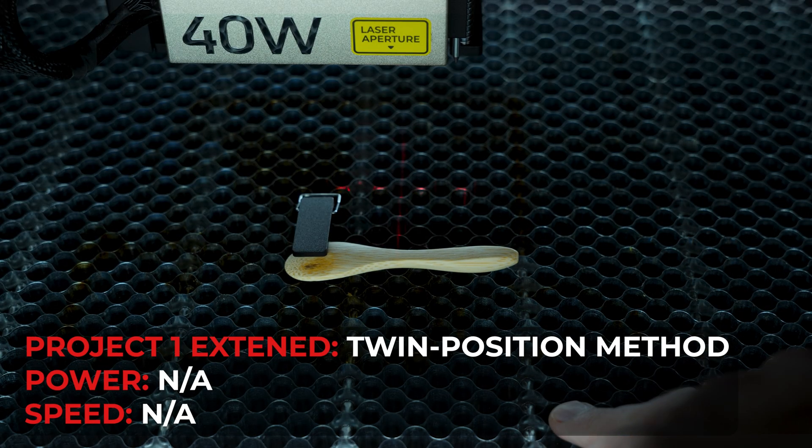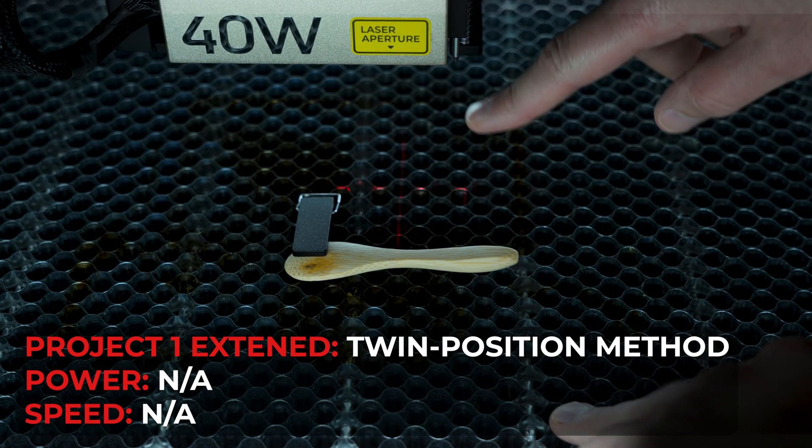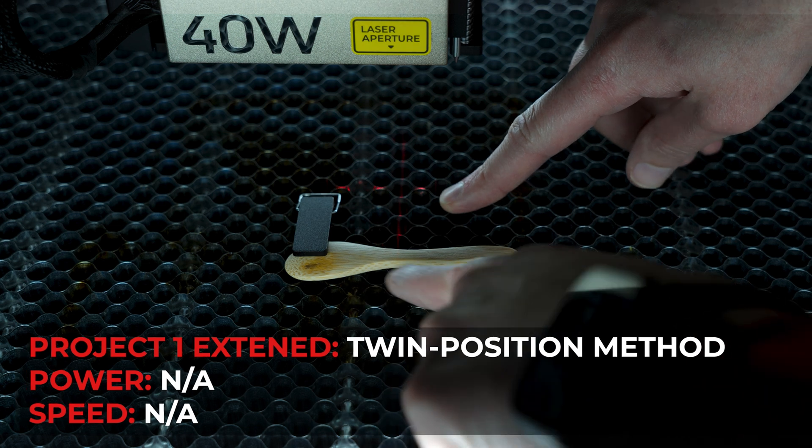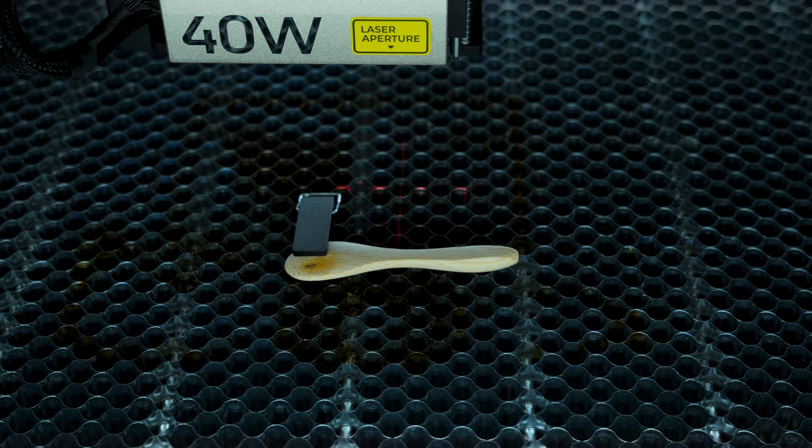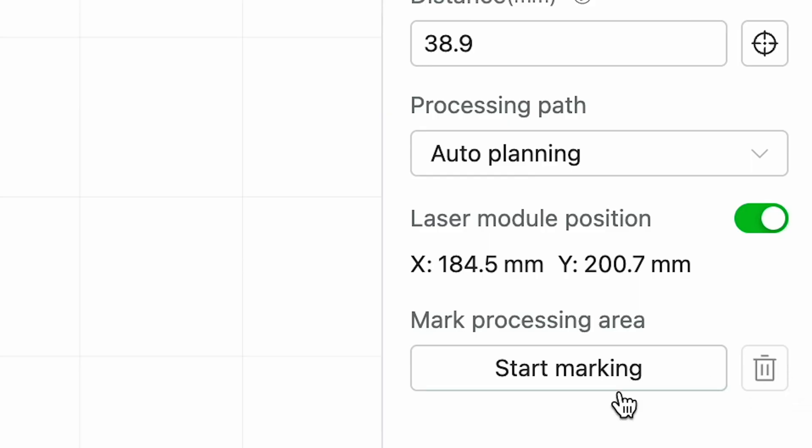Now I am going to show you how to use the twin positioning method. This is a mini spoon that I have in the engraving bed. So if you go to the Creative Space software and click start marking,